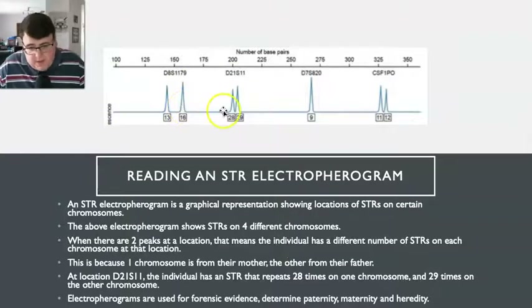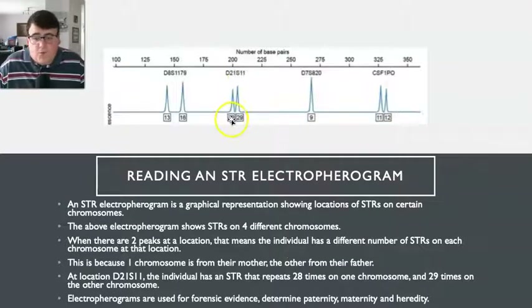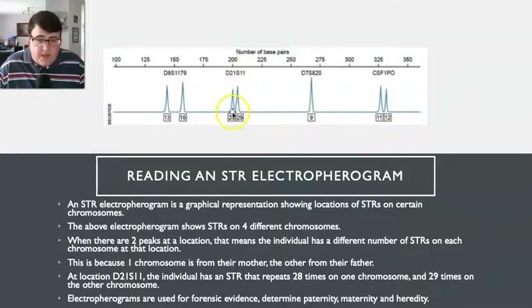The same applies at location D21S11. On one chromosome the STR is repeated 28 times, and on the other chromosome of that pair it's repeated 29 times.